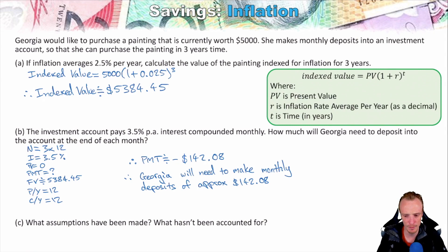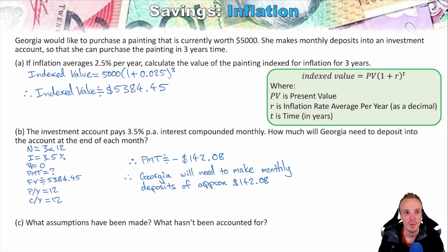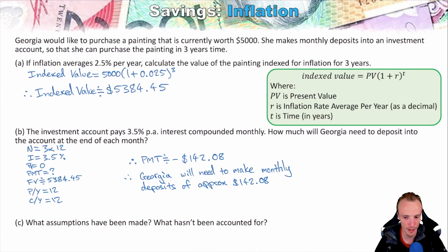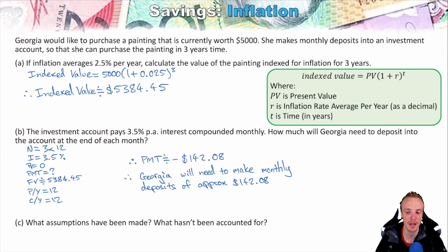Here you might get asked: what assumptions have been made, and what hasn't been accounted for? We're assuming the inflation rate is going to remain the same — that's a big assumption. Inflation can change very quickly; whilst governments try to ensure it stays as constant as possible, it will fluctuate, and it changes for so many different reasons. What hasn't been accounted for — thinking back to our previous video on tax — we're making deposits into an account that's earning interest. Interest is a form of income, and Georgia might need to pay tax on this income, which could mean she needs to save even more. That's something that hasn't been accounted for as well.